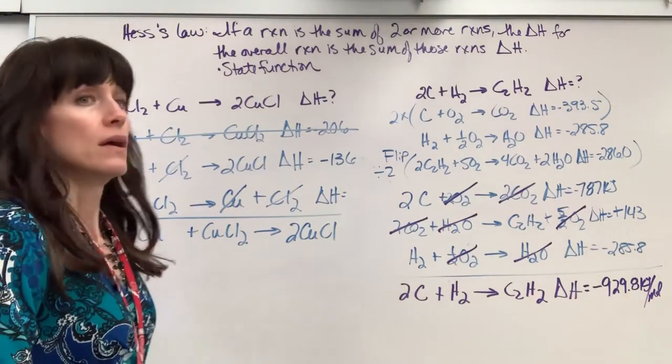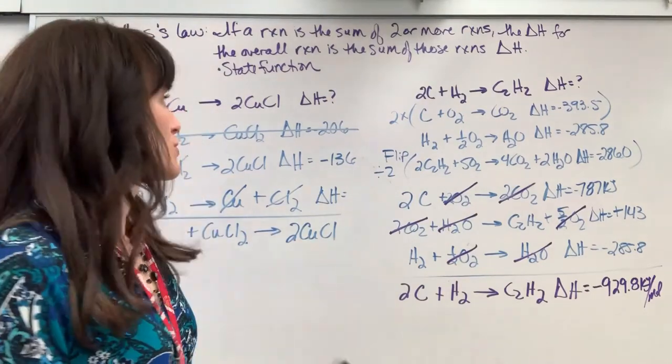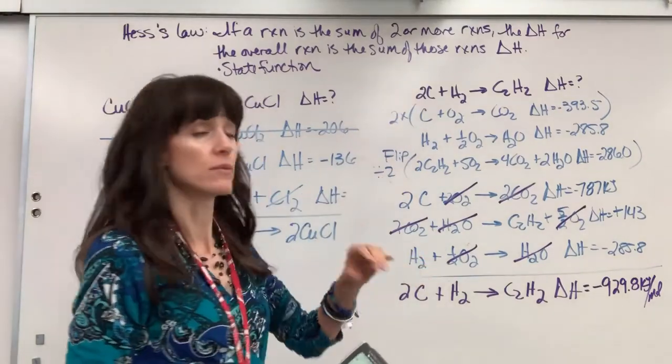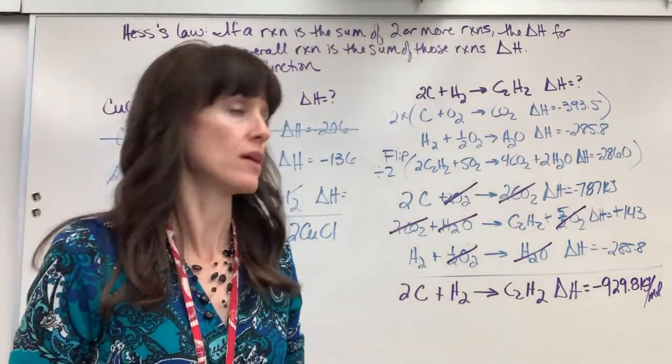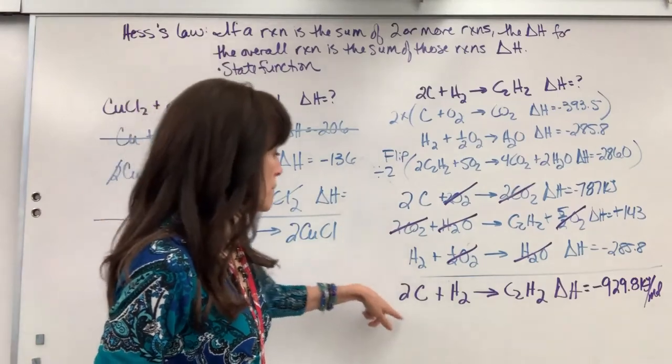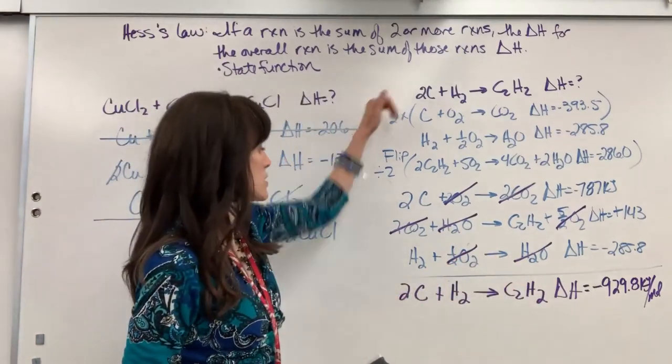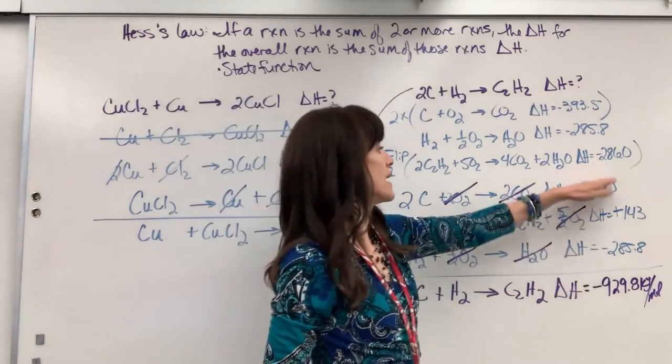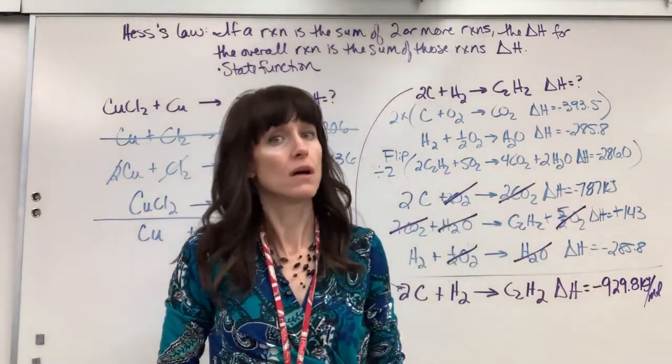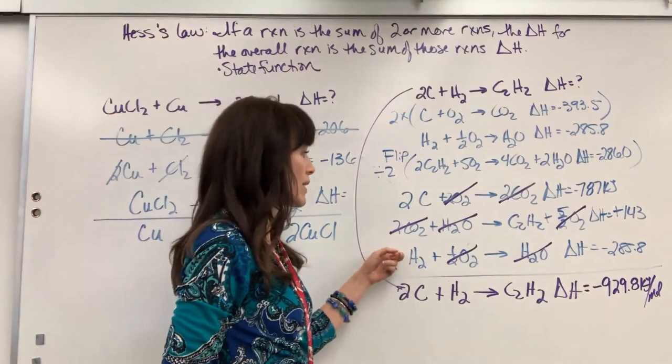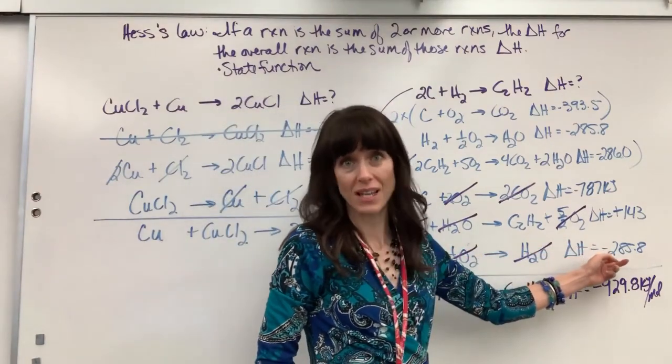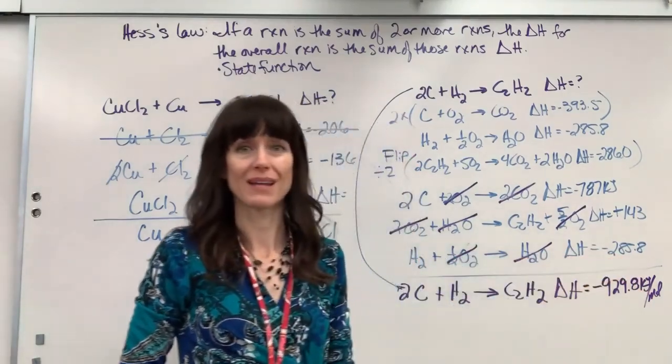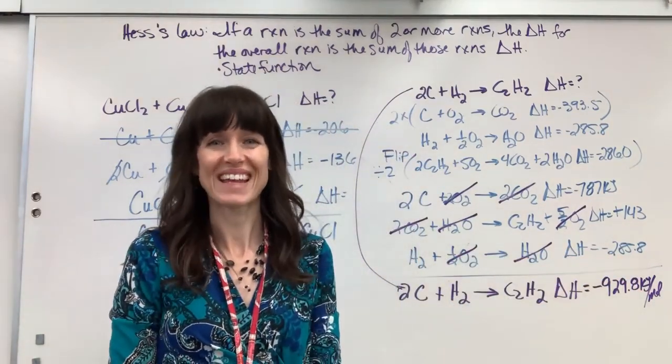Good work. Remember, you're matching what you have from the target to the equations given. You can multiply, divide, flip them. When you add them together, match that target equation. Those are the same. And then the important part, add those delta H's. Also remember, whatever you do to the equation, you've got to adjust the delta H to match. If you flip it, change the sign. If you multiply or divide, multiply or divide. Good work. Have a great day.